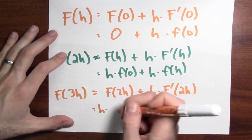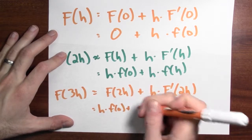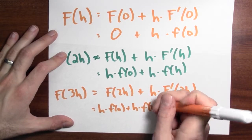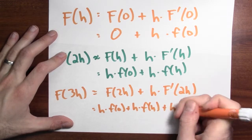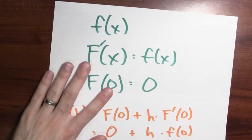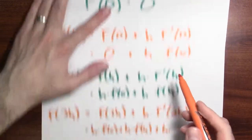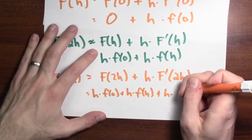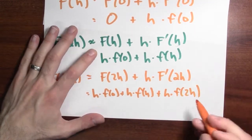So it's h times little f of 0 plus h times little f of h, plus h times, and now what's my derivative of big F at 2h? Well, big F's derivative is little f, so I can use that here. This will be little f at 2h. And then I just keep on going.